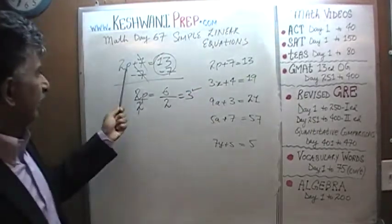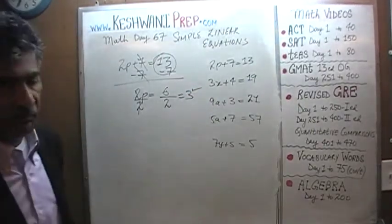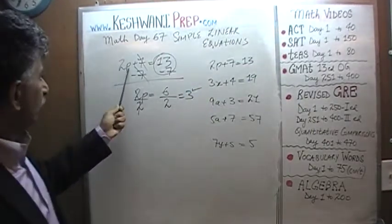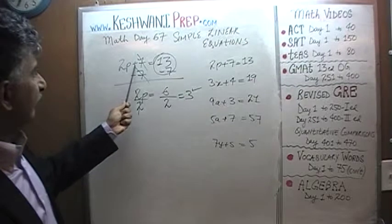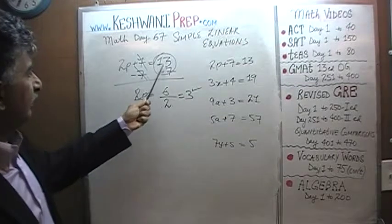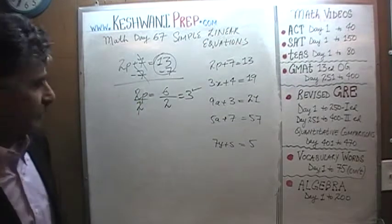Let's put it back in the equation here and make sure it makes sense. 2 times 3 is 6. 6 plus 7 is 13, and that's exactly what we have here.